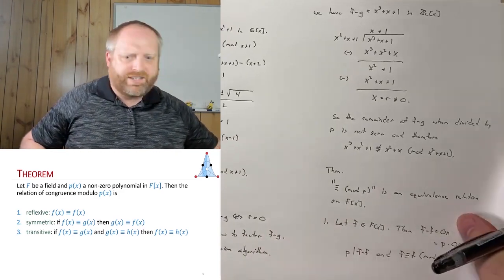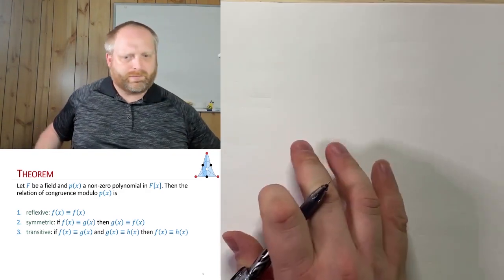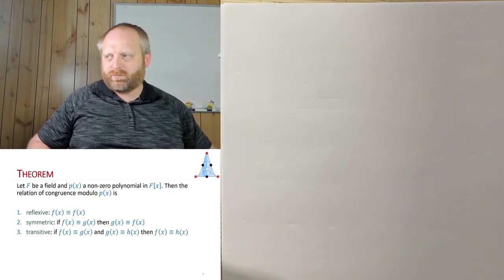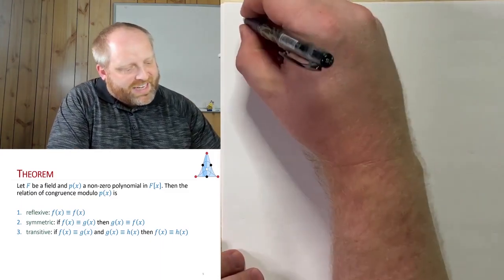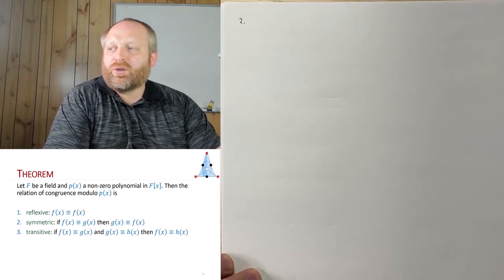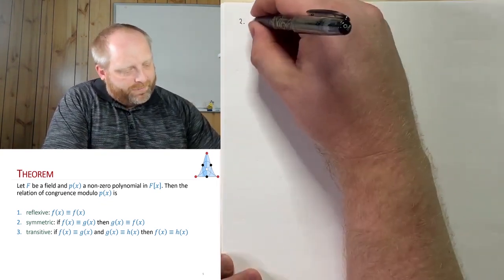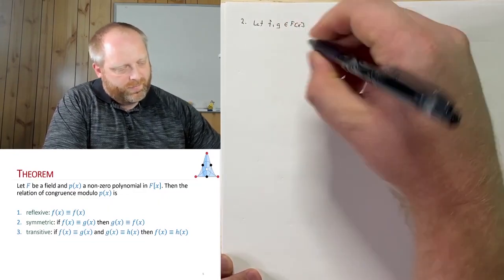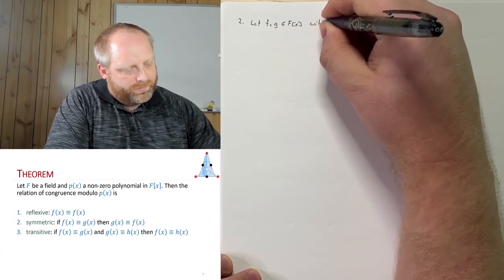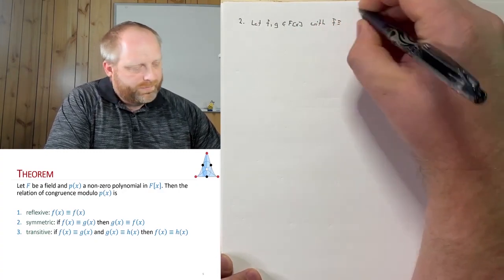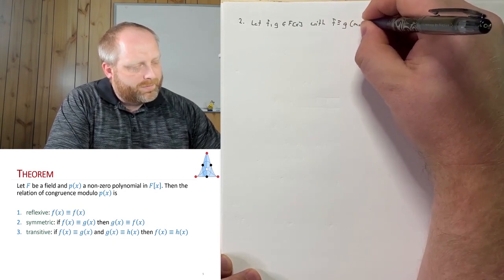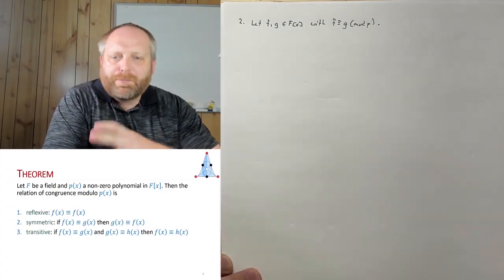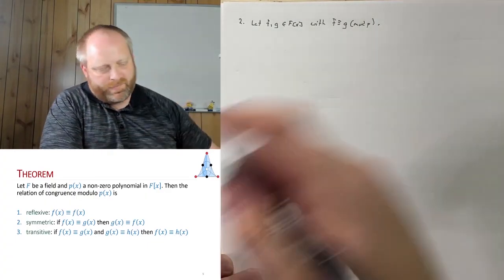For the next one, I'm going to need a new sheet here. So symmetric is the next one we want to be able to show. So in this case, I have two polynomials. So let's let f and g be elements inside F[x], with the following being true: f is congruent to g mod p. And we want to be able to show that g is equivalent to f mod p.